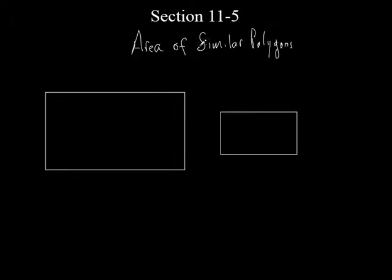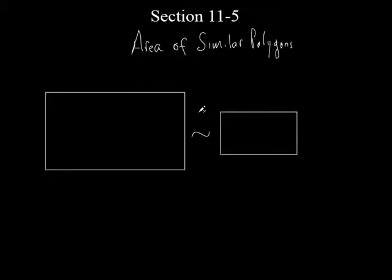So they are similar to each other. The little squiggly symbol means similar. Every one of these problems I'm going to give you, they're all similar. They're not all going to be rectangles — they could be triangles, quadrilaterals, pentagons, all kinds of different polygons — but they'll all be similar to each other. You don't have to go through all kinds of stuff to figure out missing sides because they're similar.